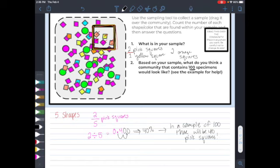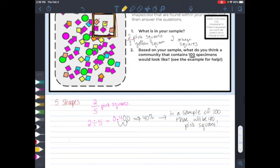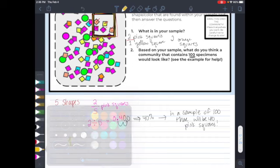Let's move on and talk about the yellow square. I have one yellow square in my sample, and I have, again, a total of five different shapes. So one out of my five shapes is yellow.